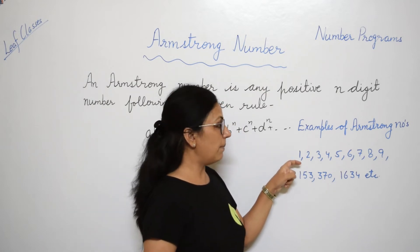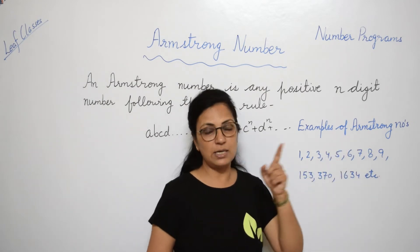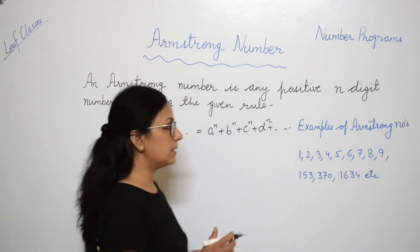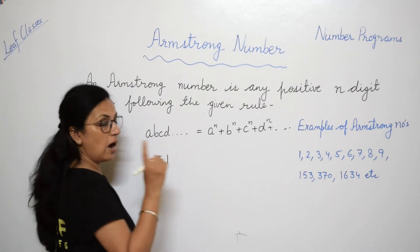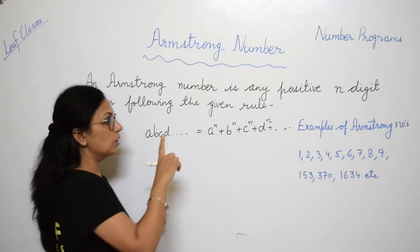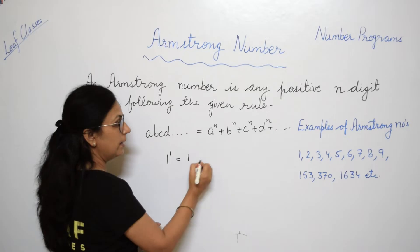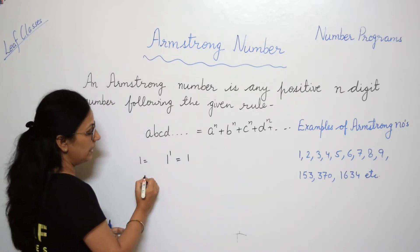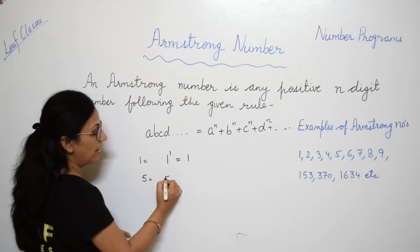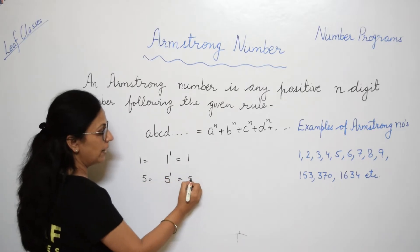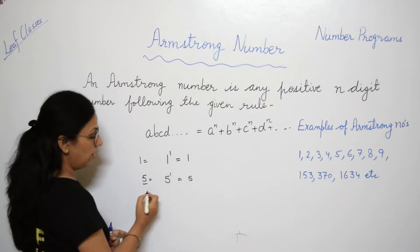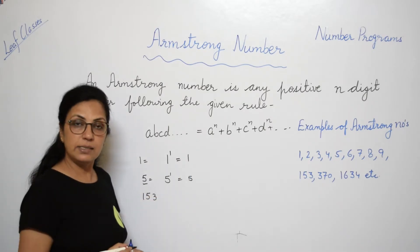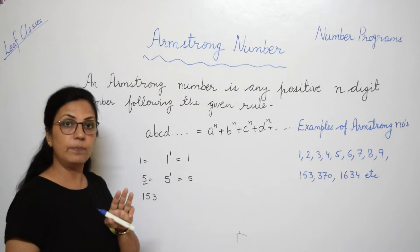Here I have written a few Armstrong numbers: 1, 2, 3, 4, 5, 6, 7, 8, 9 — all these are Armstrong numbers. How? Take the number 1: there is one digit, so 1 to the power 1 is 1, which equals the number. Similarly, 5 to the power 1 is 5, equal to the number. Now if I say 153 — there are three digits.